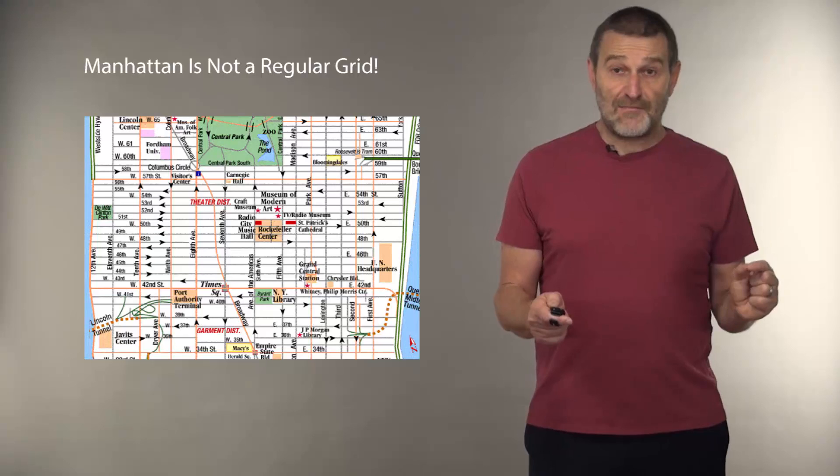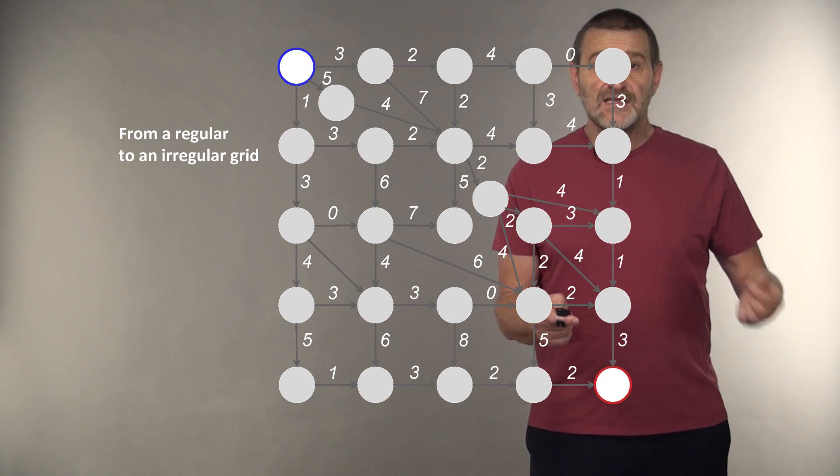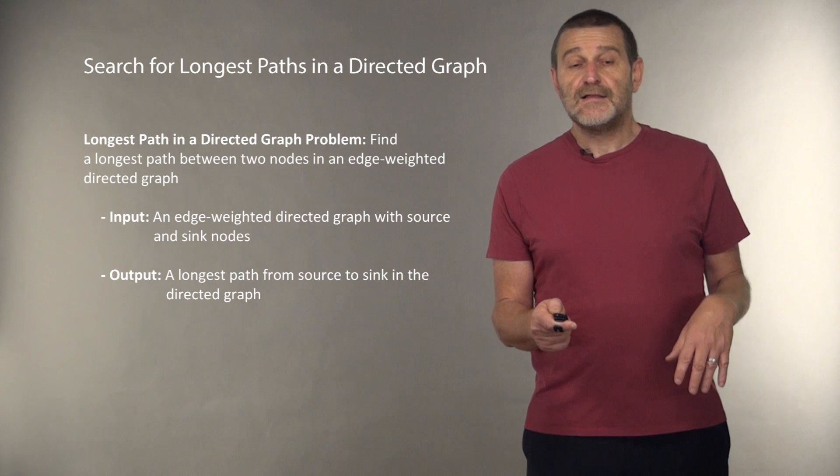Another thing we need to keep in mind is that Manhattan is not a perfect rectangular grid. Broadway cuts across. And we can model this grid as an arbitrary graph, where edges can go from whatever vertex, whatever node, to whatever node.